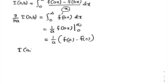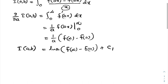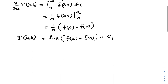Now integrating with respect to a, on the left side we have I(a,b). The integral of 1/a is ln(a), so I(a,b) equals ln(a) times [f(infinity) minus f(0)] plus a constant C₁.